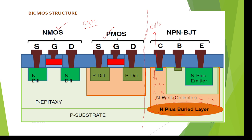Next, we need to design the base terminal. Since the N-well is N-type, we diffuse holes into the N-well to form the base. This P-type region diffused into the N-well is named the base terminal.